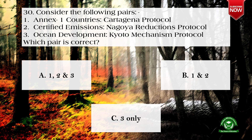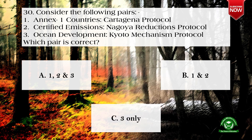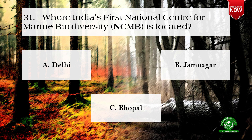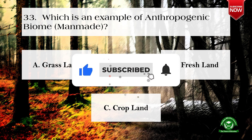Next question: consider the following pairs — 1) countries to Cartagena Protocol, 2) certified emissions to Nagoya reductions Protocol, 3) ocean development to Kyoto mechanism Protocol. Which pair is correct? Options are: a) one, two and three, b) one and two, c) three only. The correct option is c) three only. Next question: where is India's first National Centre for Marine Biodiversity located? Options are: Delhi, Jamnagar, and Bhopal. The correct option is b) Jamnagar.